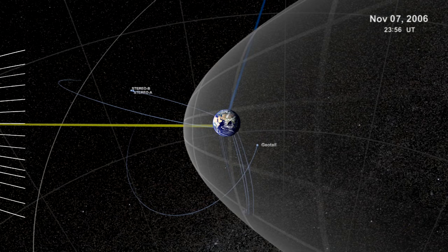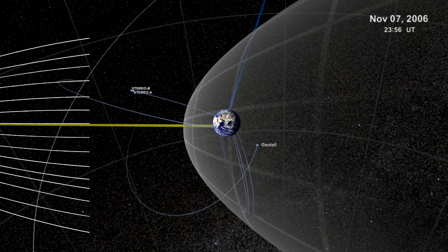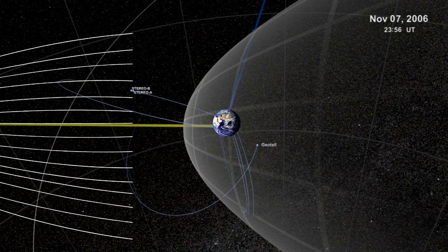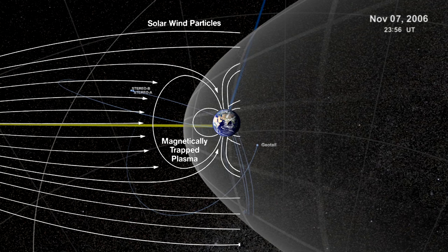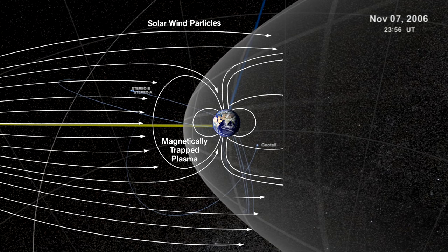What happens is that the magnetosphere routes the solar wind charged particles along the Earth's magnetic field lines to the north and south polar regions. There, they collide with oxygen and nitrogen atoms in the thermosphere. Quantum mechanics explains how these collisions create light.